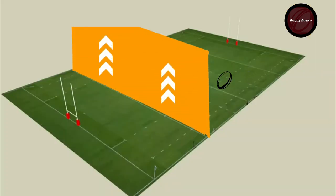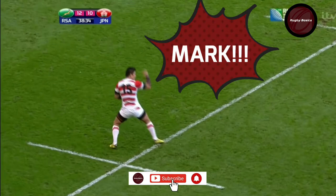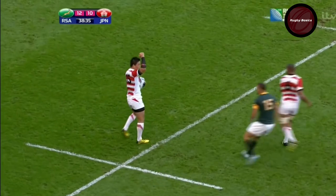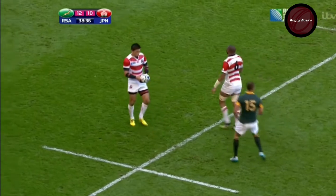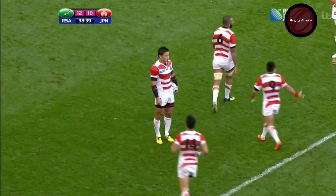The plane is an imaginary wall that runs straight up from the 22 meter line. You then have to catch the ball before it touches the ground or another player, and simultaneously while you catch the ball, call mark.